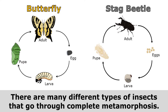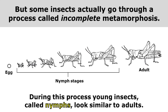Notice that in both life cycles, the larvae looks very different from the adult. But some insects actually go through a process called incomplete metamorphosis. During this process, young insects called nymphs look similar to adults. So even though lots of insects go through a very similar life cycle, some types of insects like crickets and grasshoppers have a life cycle that looks a little different.